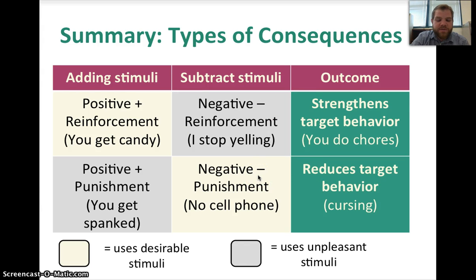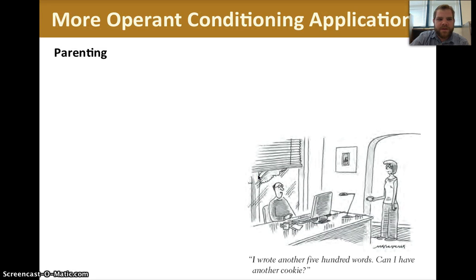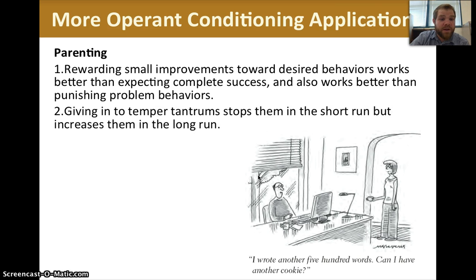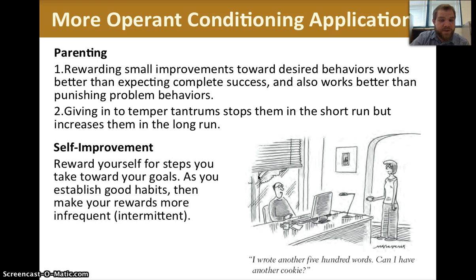The reinforcement method has been shown time and time again to be much more effective at strengthening behavior and even reducing target behavior. It's not to say we don't need punishment, but the type of punishment that has become commonplace involves force and violence, and it's not exactly effective. In parenting, rewarding small improvements toward desirable behaviors works better than expecting complete success and better than punishing problem behaviors. Giving in to temper tantrums stops them in the short run but increases them in the long run. For self-improvement, reward yourself for steps you take towards your goals, and as you establish good habits, make your rewards more infrequent or intermittent.